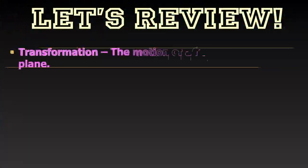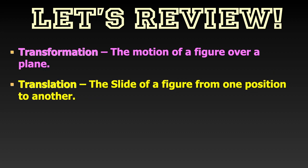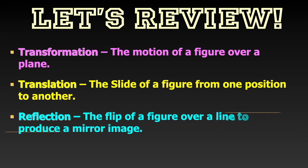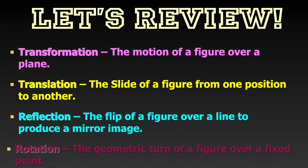Let's review. We learned that transformation is the motion of a figure over a plane. There are three types of transformations: translation — the slide of a figure from one position to another; reflection — the flip of a figure over a line to produce a mirror image; and rotation — the geometric turn of a figure over a fixed point. You did beautifully today — give yourselves a round of applause!